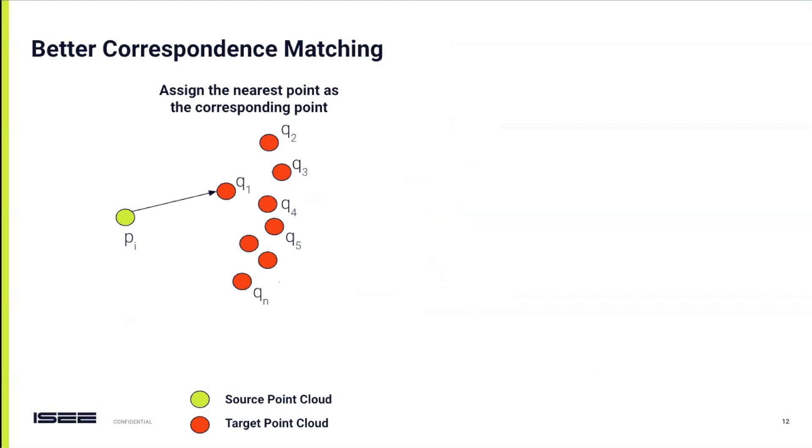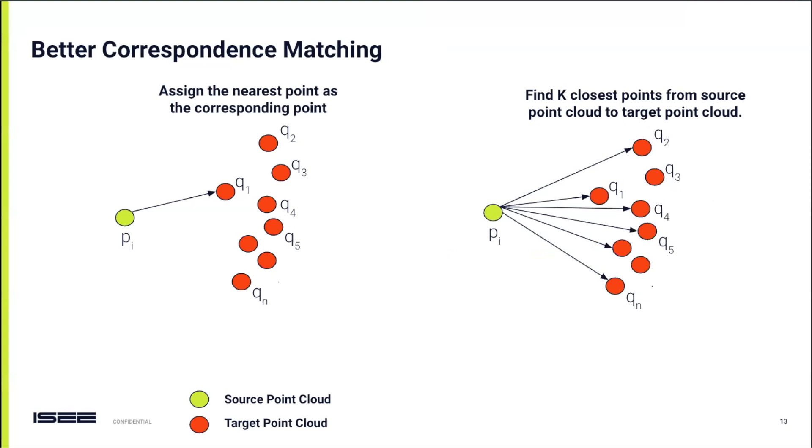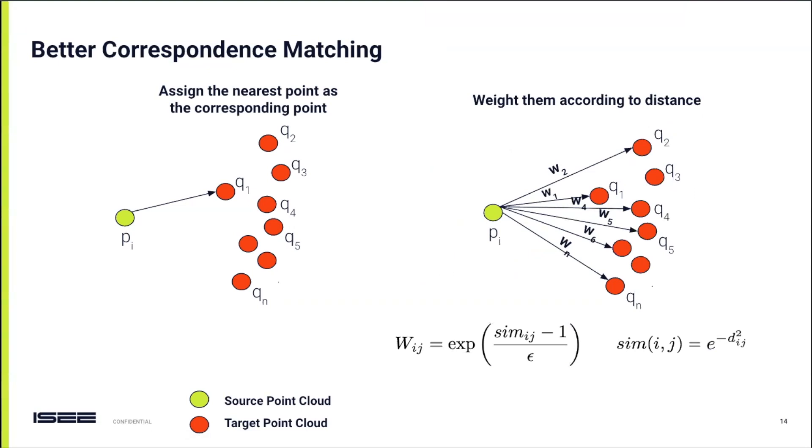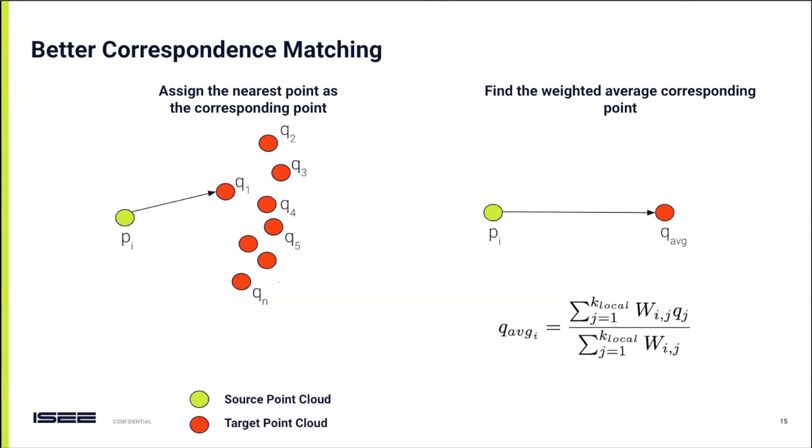But how do we establish more accurate correspondences between our source and target point clouds? Typically, nearest neighbor loss would lead us to match each source point with its closest target counterpart. However, this approach has its pitfalls. For example, it might result in all source points converging on a single target point or in a degenerate solution when the nearest neighbor distance is zero. To circumvent these issues, we adopt a more nuanced strategy. Instead of relying on a single nearest point, we consider the k closest points for each source point in the target point cloud. We then assign weights to these k points based on their proximity to their respective source point. The closer a point is, the higher its weight. Conversely, more distant points receive lower weights. By taking a weighted average of these k points, we designate this average point as the corresponding point. This method not only yields superior results but also accelerates the convergence in correspondence matching.